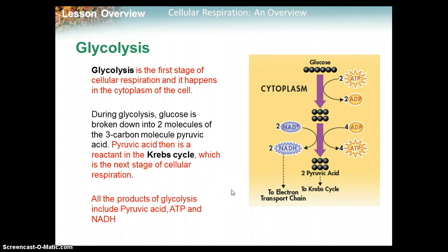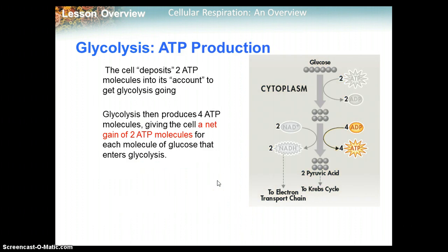The products of glycolysis include pyruvic acid, some ATP, and NADH. For ATP production in glycolysis, the cell deposits two ATP to get glycolysis going — that two ATP is converted to ADP. Glycolysis then produces four total ATP molecules, so you end up with a net gain of two ATP molecules at the end, because you put in two and made four.